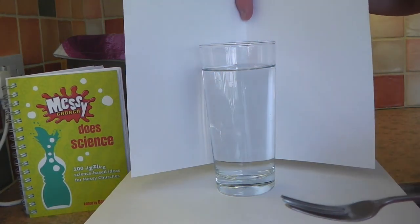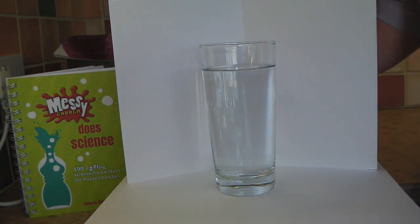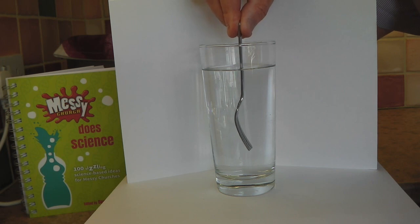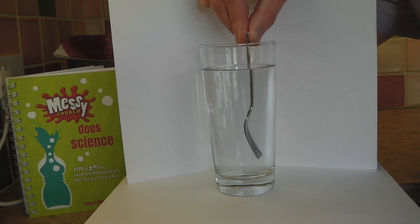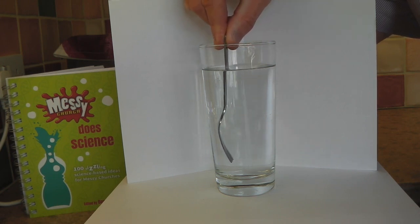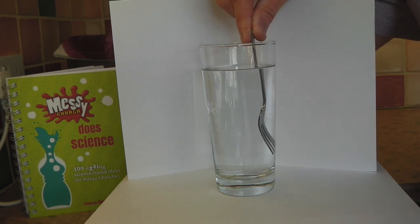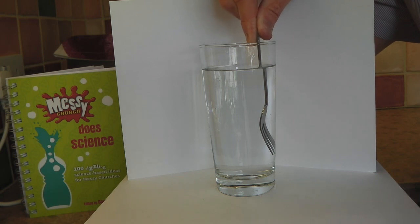I'm going to put a piece of white card or paper standing behind just to make it a little bit clearer. And what I'm going to do is I'm just going to put the fork into the centre of the glass. And then I'm going to move it to one side. Can you see? That actually, the fork is broken. Where the handle goes into the water is different from where the handle appears in the water.